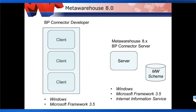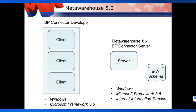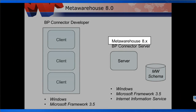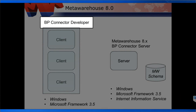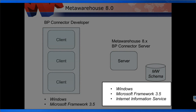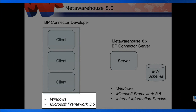We will emphasize the installation of the solution for the extraction, transformation, and load process. For this, we need to have MetaWarehouse metadata created and configured, since the BP Connector uses the same metadata. The server will install a copy of MetaWarehouse to create the metadata, along with the BP Connector server. On the client, we will only install the BP Connector Developer. Prerequisites for the server include Windows OS, Microsoft .NET Framework 3.5, and Internet Information Service. For the client, we need only the Windows operating system and Microsoft .NET Framework 3.5.